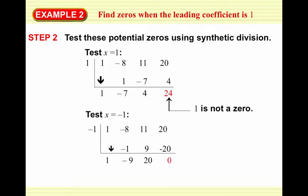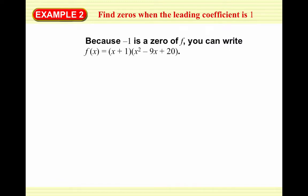When we test negative 1, using the same coefficients, we go through the synthetic division process and get a remainder of 0. So negative 1 is a zero — we have one of our answers.